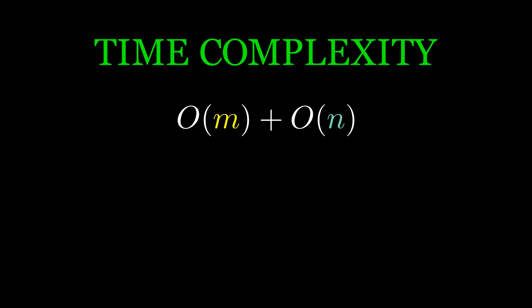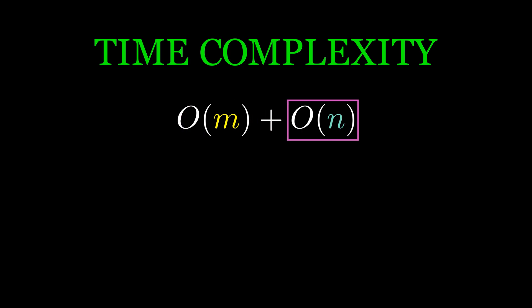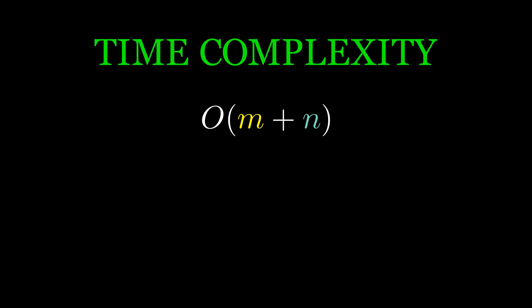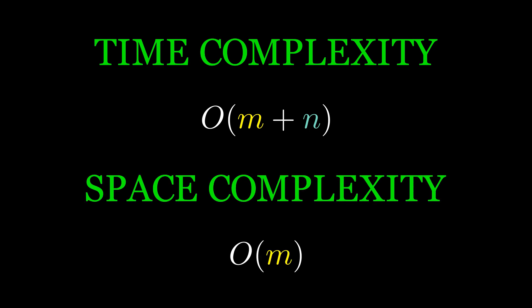The time complexity of the algorithm depends on two parts. The first is the construction of the LPS array, which involves looping over the pattern once, so the time complexity of that is O(m), where m is the length of the pattern. The second part is the searching phase, which involves looping over the text, giving a time complexity of O(n), where n is the length of the text. Therefore, the total time complexity of the KMP algorithm is O(n+m). Additionally, the algorithm requires an array to store the LPS table, which has a size equal to the length of the pattern, so the space complexity is O(m). Since we only need this array and a few extra variables, the overall space complexity remains O(m).